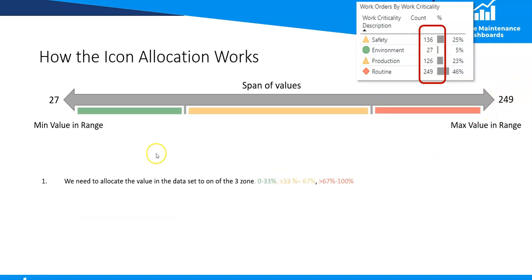The next thing it does is it breaks that span into the different percentage ranges. Power BI is not really interested in the start value and the end value per se, it's looking at the spread of that span between the highest and lowest value. So it calculates the span which is actually 222. If you were to subtract 27 from 249 you would get 222 and that's the span.